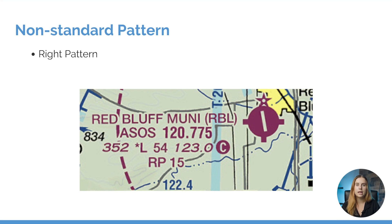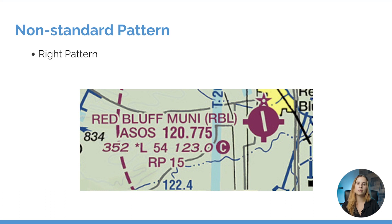For example, if the direction of the traffic pattern is right pattern, it will be shown on the VFR sectional chart. As you can see in this example for Red Bluff Municipal Airport, at the very bottom we have RP 15. That means for runway 15, we're going to be using right traffic pattern as opposed to the standard left traffic pattern.